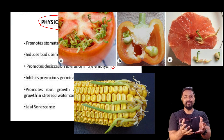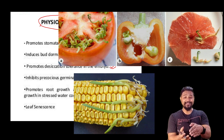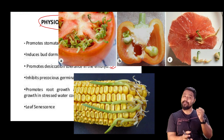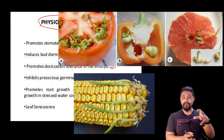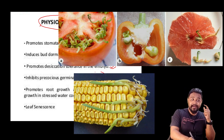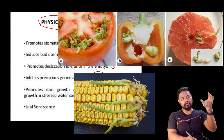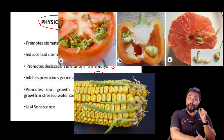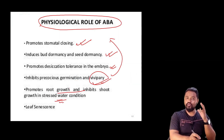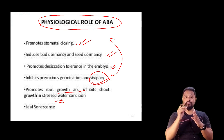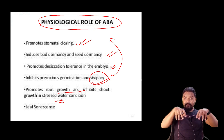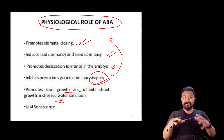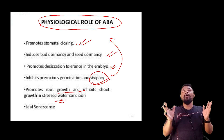Normally, germination happens after a full maturation period of 8-9 months. Abscisic acid ensures germination does not happen prematurely. It also promotes root growth but inhibits shoot growth under water stress conditions — when water is scarce, root growth is favored while shoot and leaf growth are suppressed.